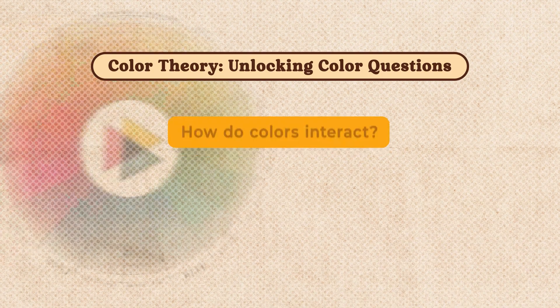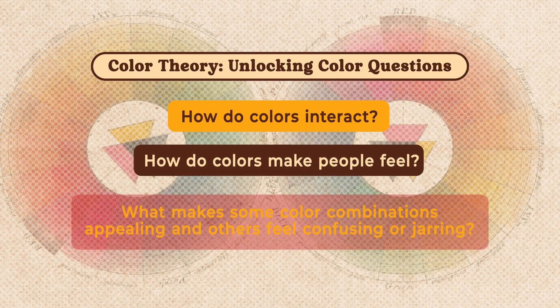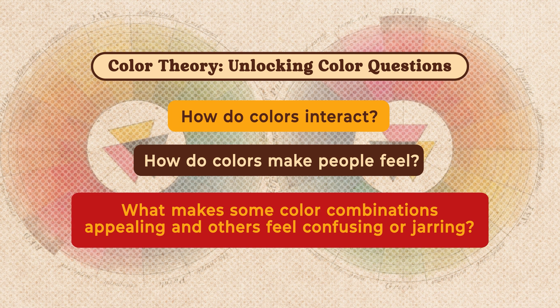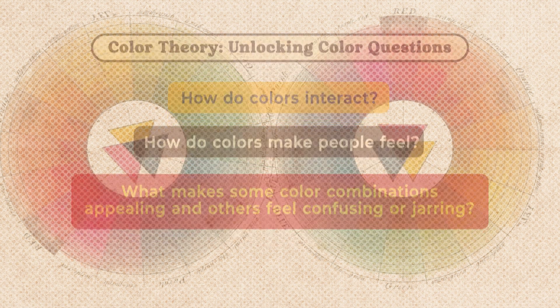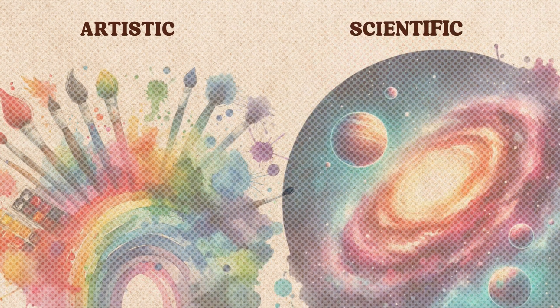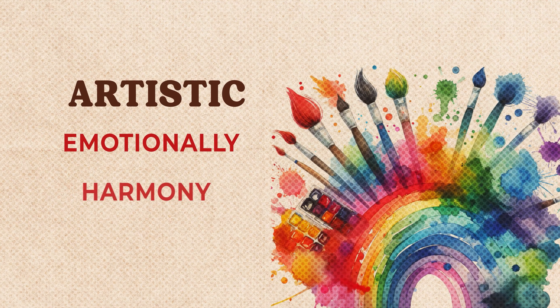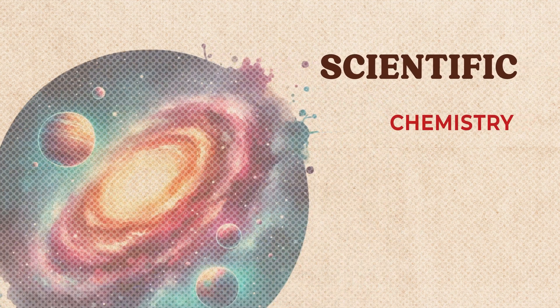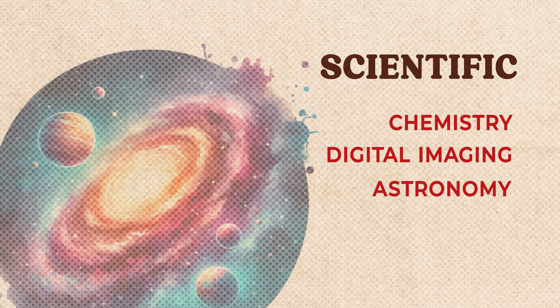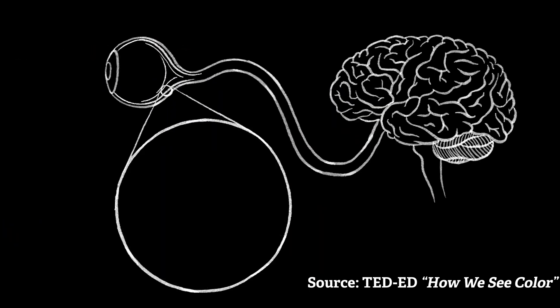At its core, color theory helps answer questions like: how do colors interact? How do colors make people feel? What makes some color combinations appealing and others feel jarring and confusing? Color theory is a combination of artistic principles and scientific insights. On the artistic side, it helps us select colors that resonate emotionally and achieve harmony. On the scientific side, color theory informs disciplines like chemistry, digital imaging, and even astronomy — it's kind of crazy how far-reaching the impact of color really is.